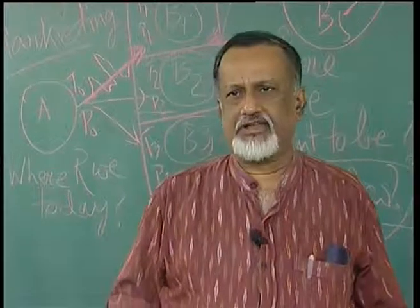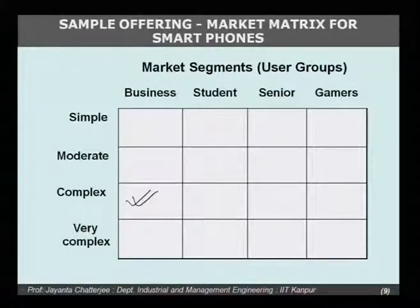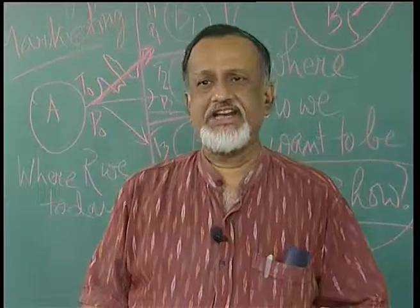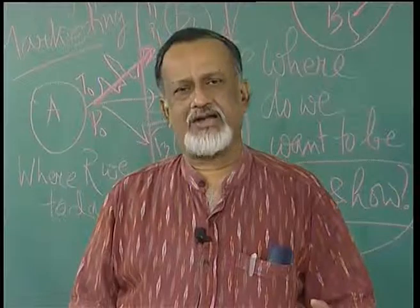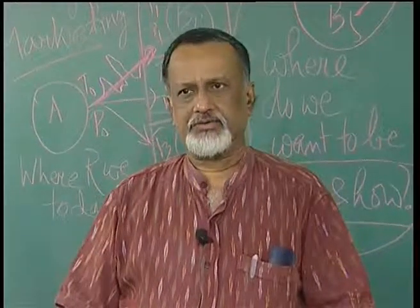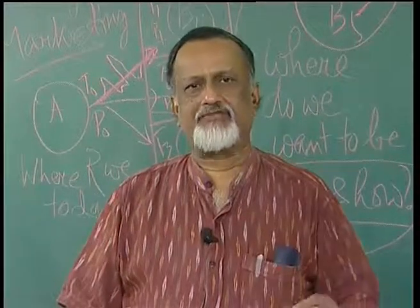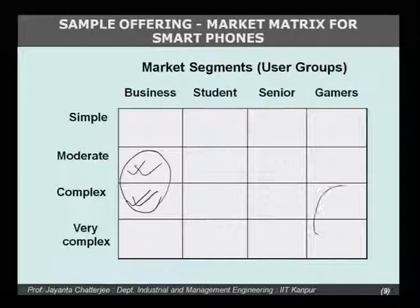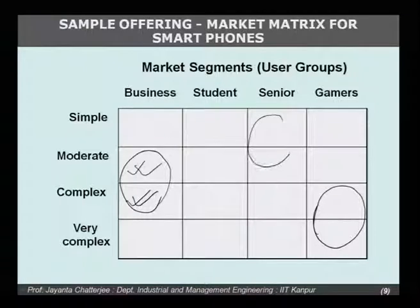If it is the smartphone user for business, they will most probably be looking for a moderate to complex user interface — the feature bundle for business users will be positioned accordingly. On the other hand, for senior citizens they may need some part of the smartness — for example, to have video chat with their grandchildren or family members — but they may not be interested in many high-speed multimedia complex features needed by gamers. So the requirement for senior citizens may be positioned quite differently.